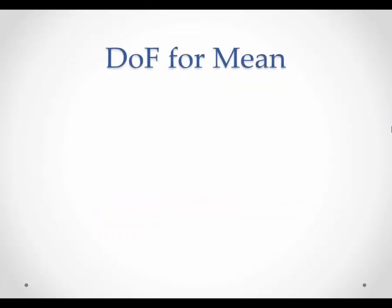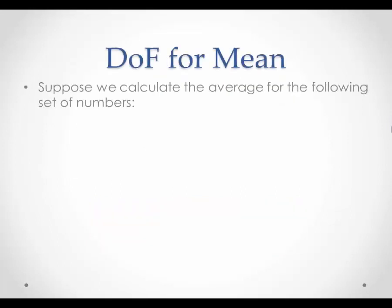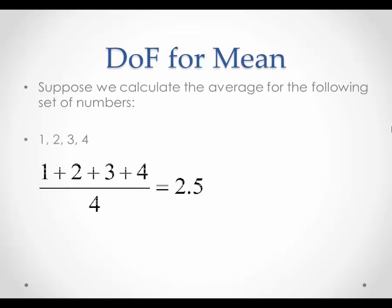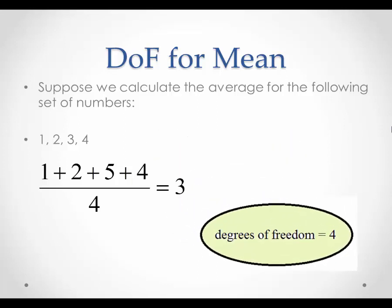Let's walk through an example. Suppose we calculate the average for the following set of numbers: 1, 2, 3, and 4. Every number in here contains important information for the average. For example, if I replace the 3 with a 5, then this will completely change the final answer. Since all four numbers are critical inputs for calculating the average, the degrees of freedom is equal to 4.